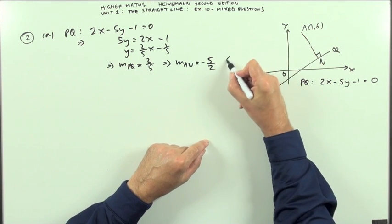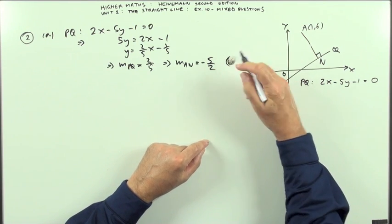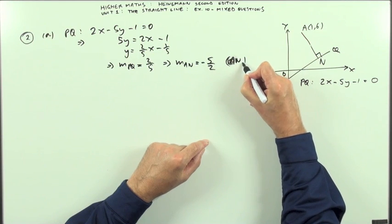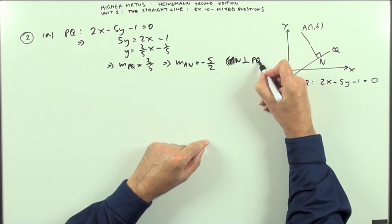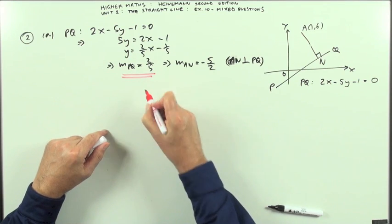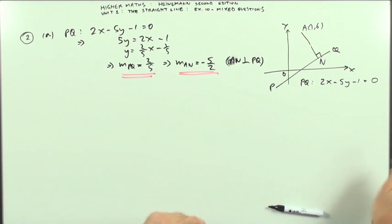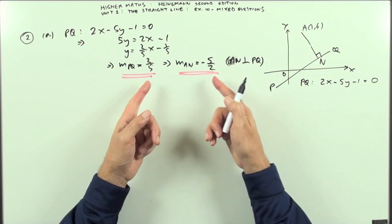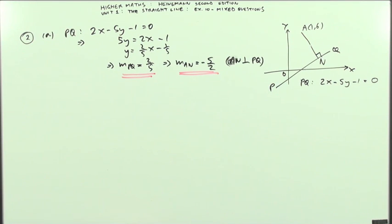You could always give a reason beside it for that. AN is perpendicular to PQ. That was the first bit. Find the gradient of that line so you can get the gradient of the perpendicular line, the negative of the reciprocal. The two of them should multiply to give negative 1.